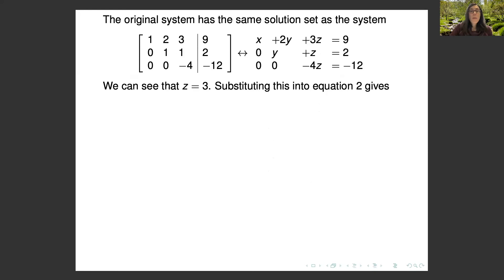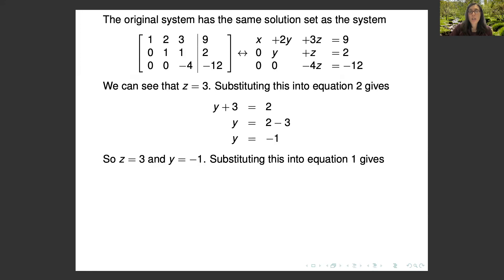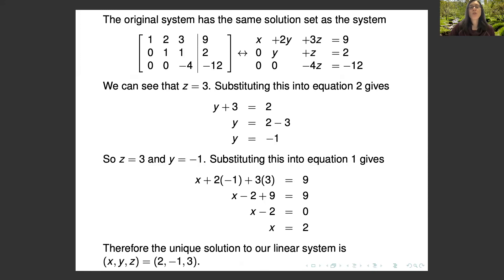Now in row echelon form, I go back to equations. The third equation is easy to solve: z equals 3. I substitute z equals 3 into the second equation to get y equals negative 1. Then substituting z equals 3 and y equals negative 1 into the first equation gives x equals 2. So (2, −1, 3) is the unique solution to the system of linear equations.